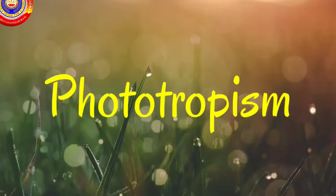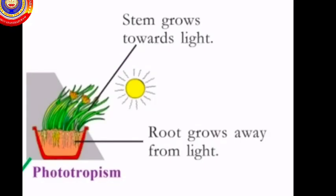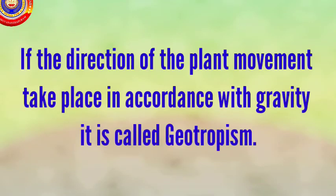The first one is phototropism. If the direction of the plant movement takes place in accordance with sunlight, it is called phototropism. Here, the stem grows towards the direction of sunlight and the root grows against the stimulus.